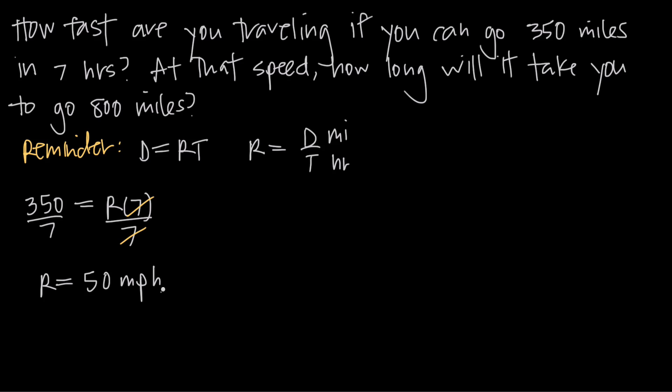Just make sure when you're doing these kind of problems that your units match the units you've been given in your problem. So we were told that we went 350 miles in 7 hours, so we know that our rate is going to be miles per hour. But sometimes the problem is going to give you meters per minute, or inches per second, or whatever the case may be. Just make sure you have the correct units when you solve for the rate. So in our case, our rate is 50 miles per hour, that's our speed.